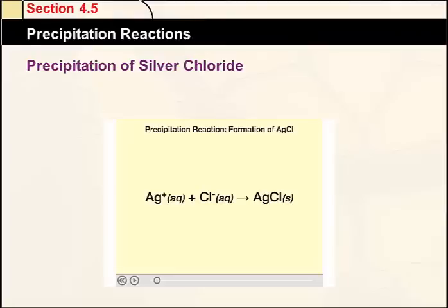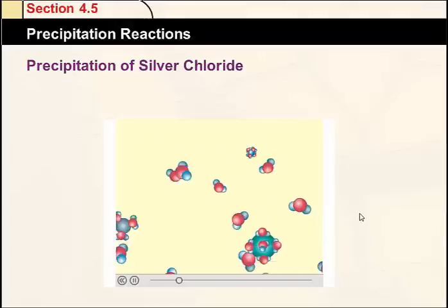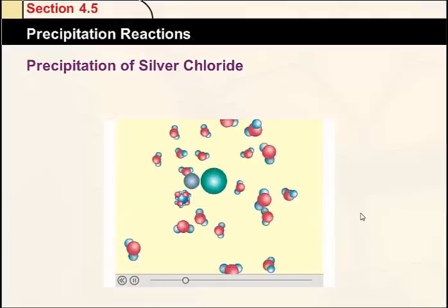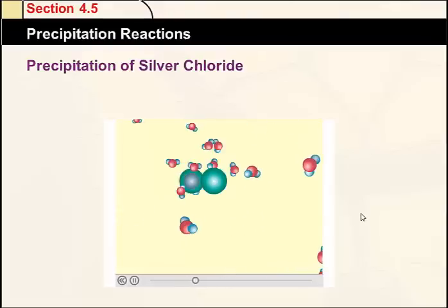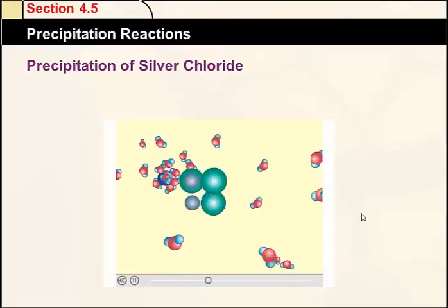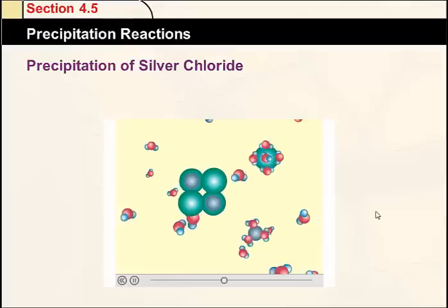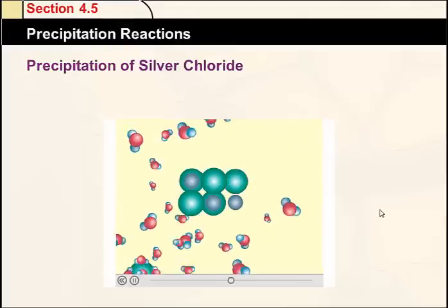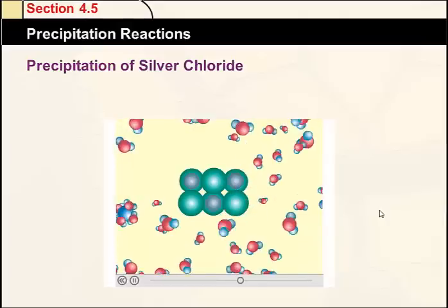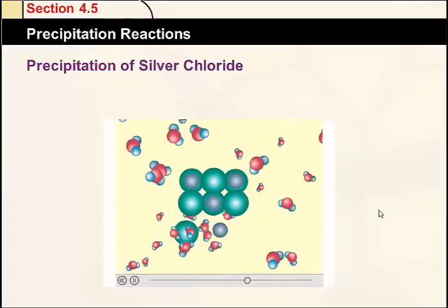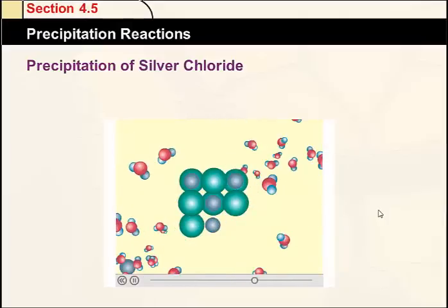Here's another example of a precipitation reaction. Silver ions react with chloride ions to form the precipitate silver chloride. In this animation, the silver ions, shown in gray, and the chloride ions, shown in green, are active participants in the reaction and combine to form the insoluble silver chloride crystal. Other ions, called spectator ions, shown here in blue and purple, are not participants in the reaction and remain unchanged in the solution.